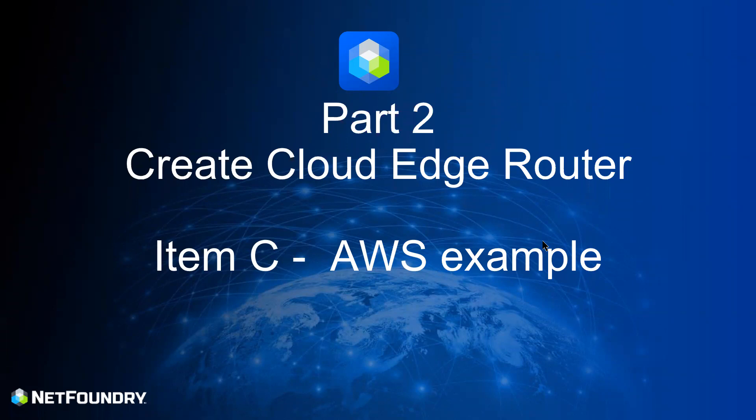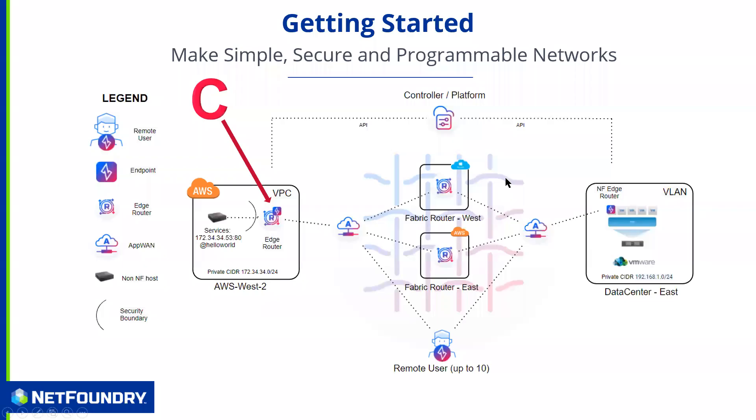Hi everybody. This is Skip Barr again, Solutions Architect here at NetFoundry. Welcome to part two of our Getting Started with NetFoundry Zero Trust Networking. Today we're going to create a cloud edge router in AWS for this example. You will need to have your AWS account ready, with SSH keys and all that, like we spoke about in part one.